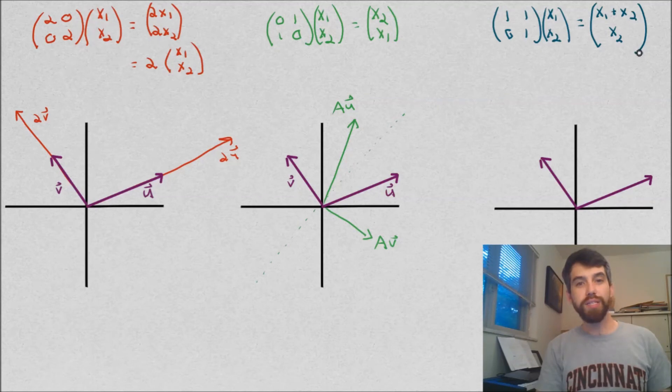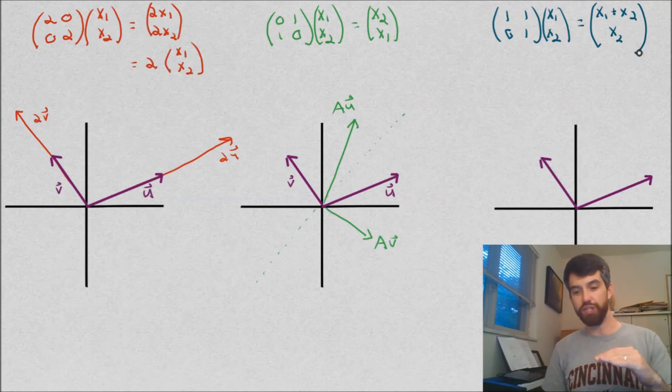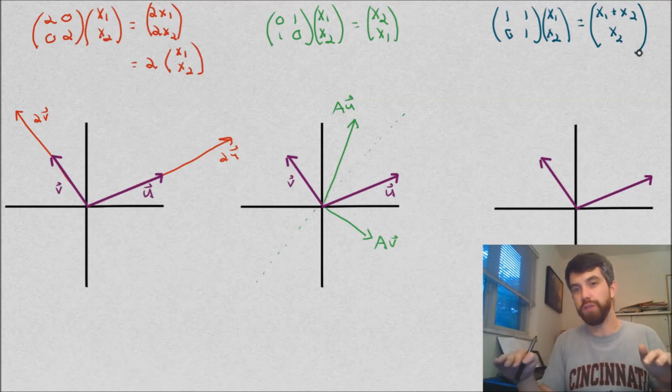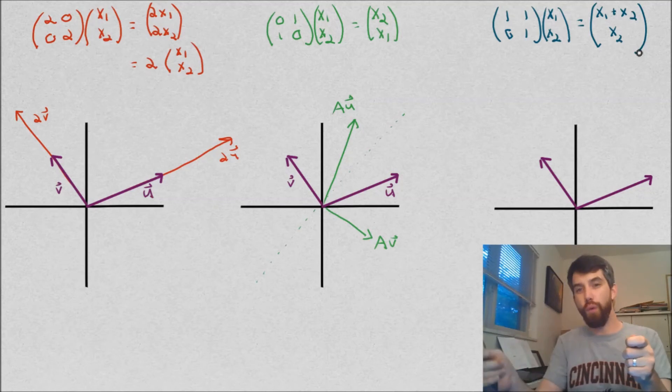So how does this work? It's kind of an interesting one. Notice that whatever the second component was, it doesn't change. Like the x2 just went to x2. It's only in the horizontal component, the first component, where it changes. Your x1 is going to transform to x1 plus x2.